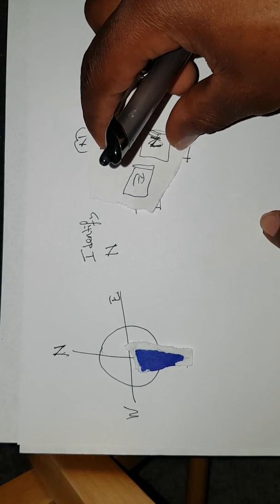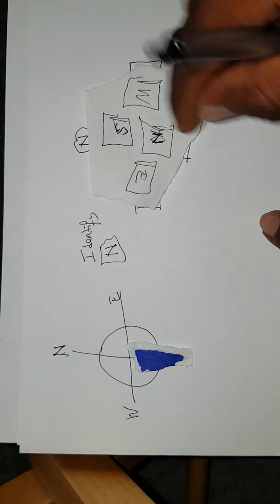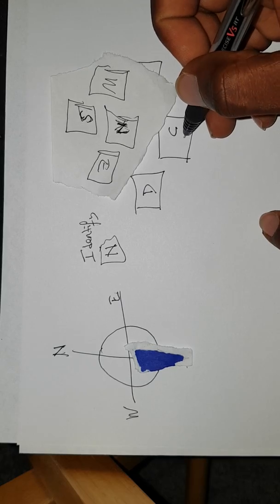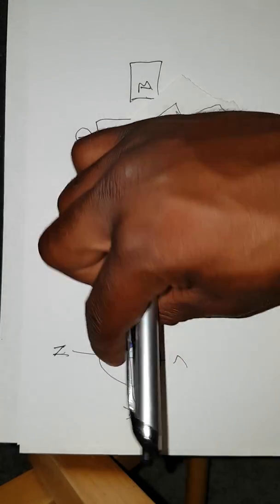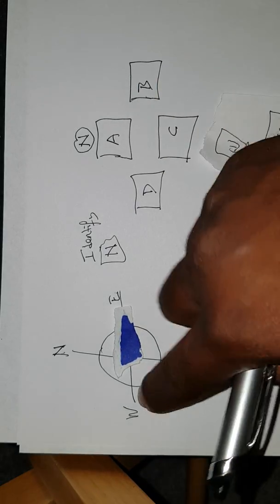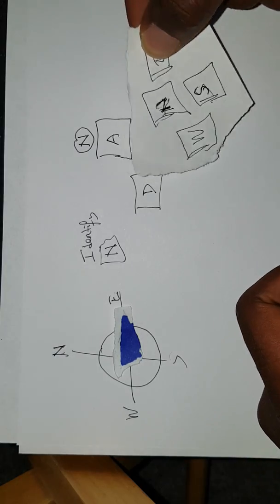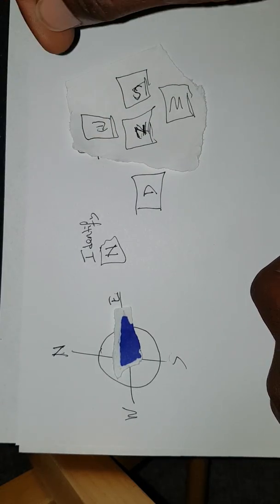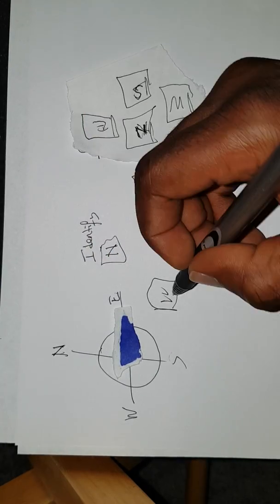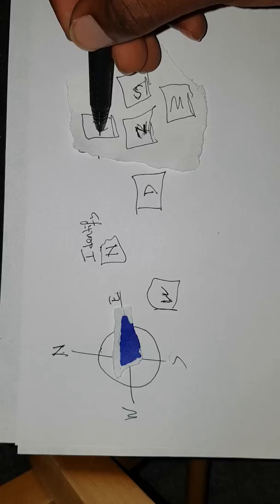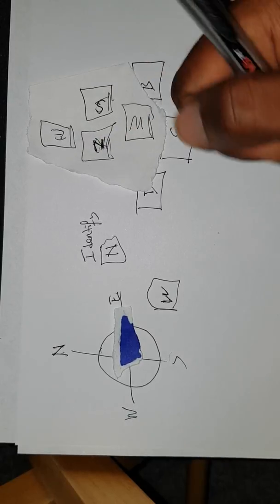So if you identify your north parking lot while heading south, that becomes C — strange, but correct. Let's say you're heading east and need to identify your west parking lot. You're going east, always put that toward north or A, so your west parking lot — east, north, west — becomes C.